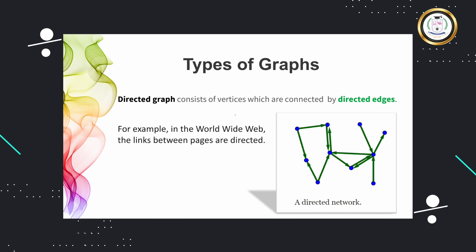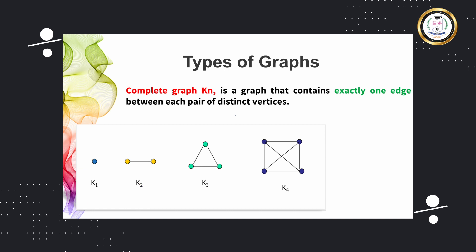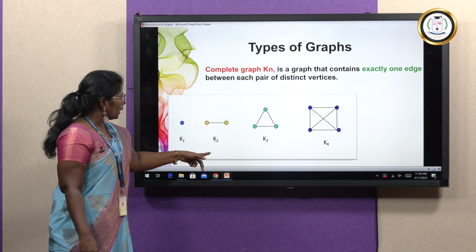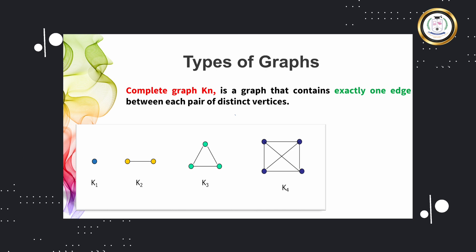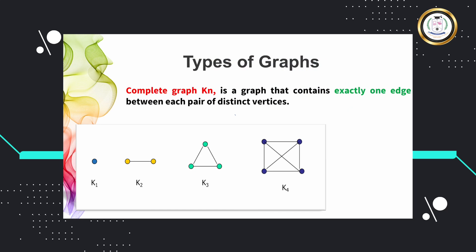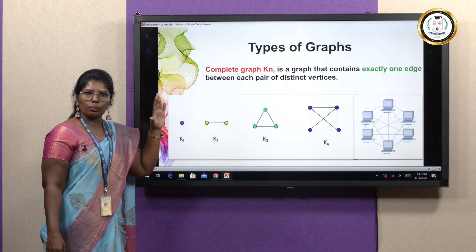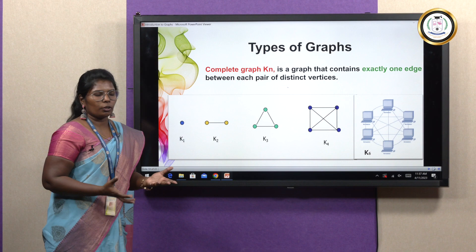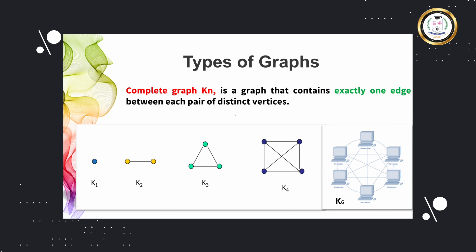A complete graph connects each vertex in the graph by exactly one edge. If we have one vertex, that is denoted by K1, and there are no edges — it is also called a null graph, a graph which does not contain any edges. K2 is a complete graph on two vertices connected by one edge. K3 is a complete graph on three vertices where all three vertices are connected to each other. Similarly, K4, and K6 is an example of a complete graph on six vertices.